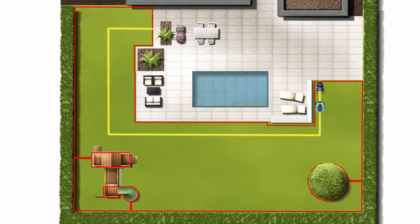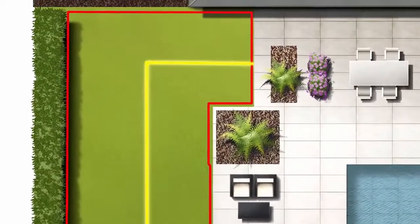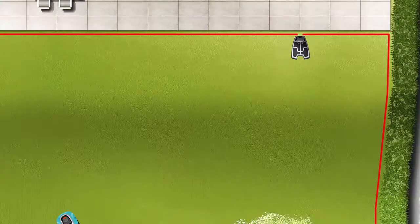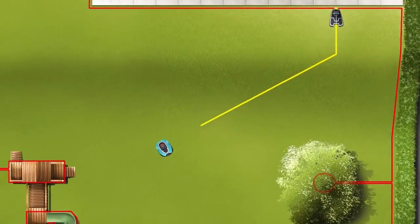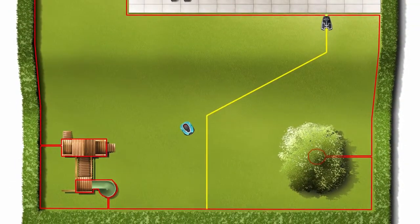Route the guide wire from the charging station to the chosen point on the boundary wire. On slopes, the guide wire should be routed diagonally to help the mower overcome the incline.